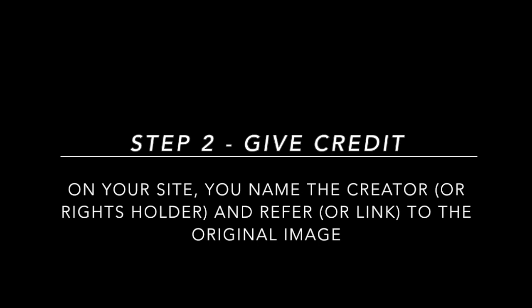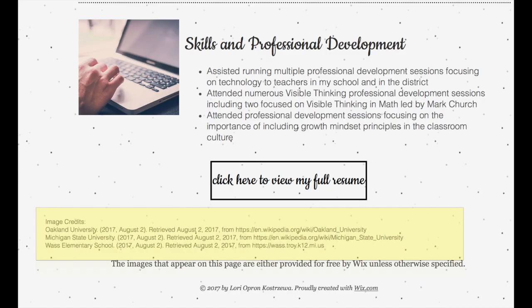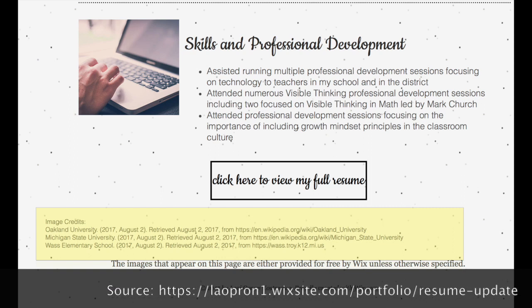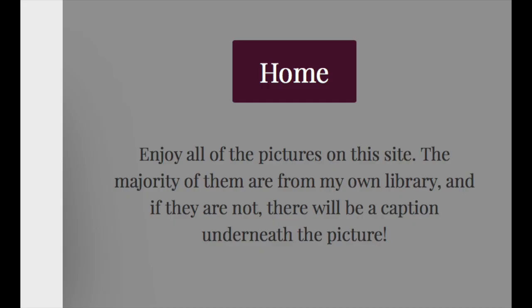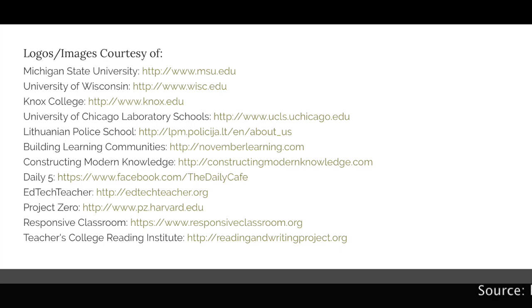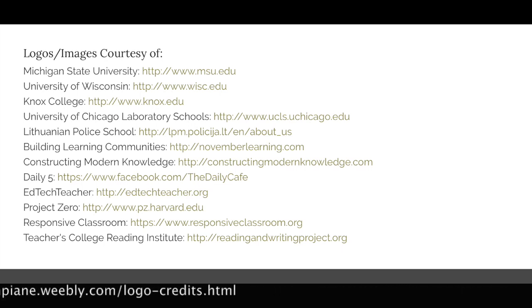In the Capstone Portfolio course, students have successfully attributed images in a number of ways. The first is to attribute each image right underneath the image caption. Or at the bottom of each page, they have listed all the image credits or attributions for that page. Or sometimes on the front page, students will give a disclaimer that says all the images on the site are their own. Or sometimes students will give one page on their site that lists all the image attributions for their entire site.